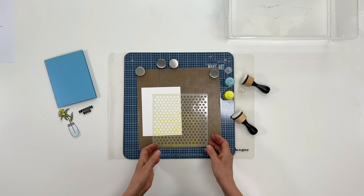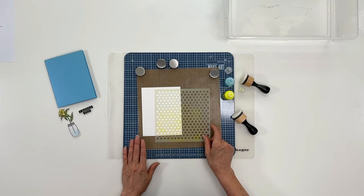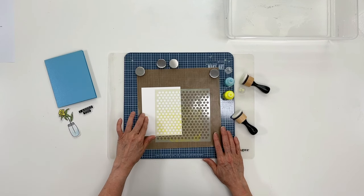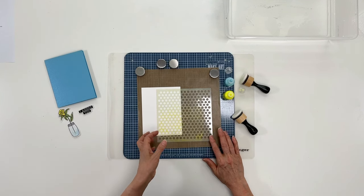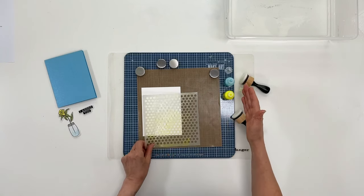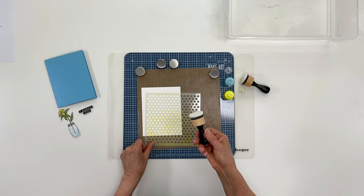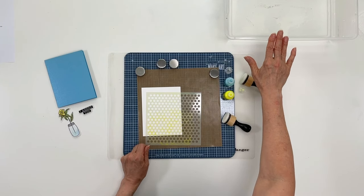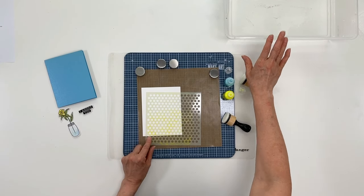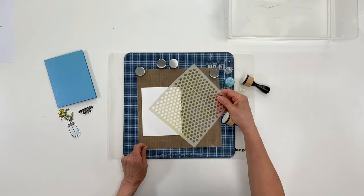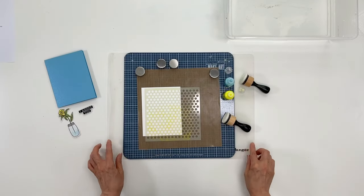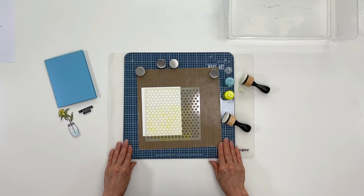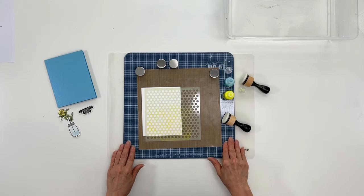To begin, what you need is a stencil. I'm working on the Wendy Make Art station with a piece of white cardstock, my liquid pearls, mini blending tool with foam, and make sure you have a container of water ready so you can clean your stencil off right away. I'm also working on the Ranger silicone mat. That keeps your station in place. It's nice as a second work surface.